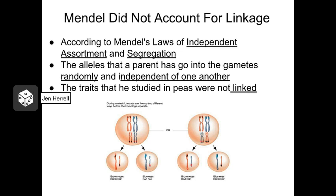Now there are exceptions to Mendel's rules. It turns out that some genes tend to travel together on chromosomes from parent to offspring, and are unlikely to become separated by crossing over. They tend to stick together. We refer to these types of genes as being linked. None of the traits that Mendel studied happened to be linked, so he didn't know anything about linkage, but linkage can affect genetic outcomes, so we need to discuss it.